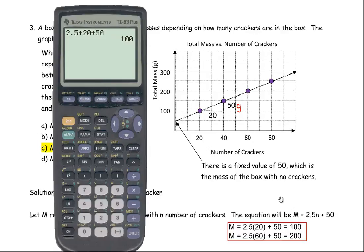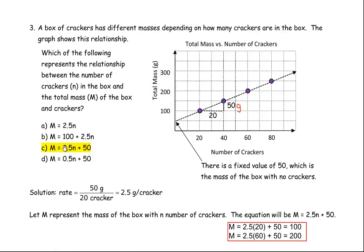If I did the one here, if I put 60 in place of N, I would do 2.5 times 60, because there's 60 crackers in that box, each having a mass of 2.5 grams. So if I change this to a 60, and then add 50 on the end, gives me 200. So notice that 60 crackers should be a mass of 200 grams. That is correct. So that is answer number C for question 3.